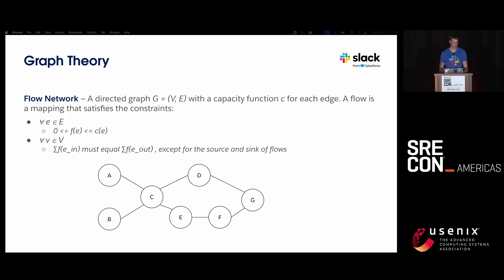This reminded me of a very classic graph theory problem. We go back to our college days with the definition of what's called a flow network. We have a directed graph with vertices and edges, and a capacity function that describes each edge. A flow is a mapping that satisfies the constraints on these edges. There are two conditions: the feasibility condition — a flow along an edge can't be negative and can't be larger than the capacity — think of this as a road network between cities where all roads are one way. The flow conservation condition states that the sum of flows going into a vertex must equal the sum of flows going out, unless it's the source or the sink.